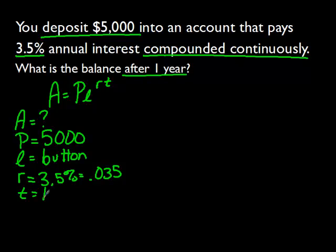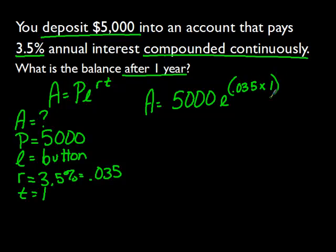We have all the information. We plug everything we have into our formula. A equals P, which is 5,000, times E, just leave as E, raised to the .035 power times 1. We start going through and breaking things down one step at a time. A equals 5,000 times E. .035 times 1 is the same as .035. We simplify that down. We now take care of any exponents we have.